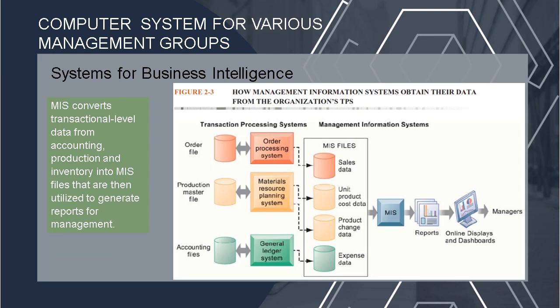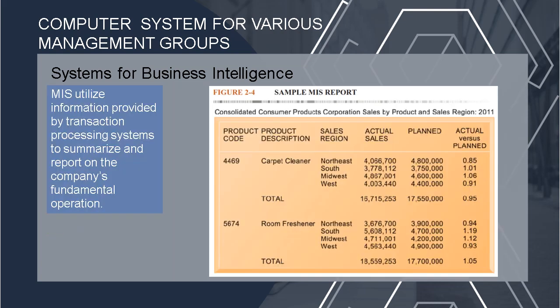If TPS handles the day-to-day operational transactions of the company, then in the system for business intelligence, MIS converts transactional-level data from accounting, production, and inventory into MIS files that are utilized to generate reports for management. Figure 2.4 is a sample MIS report — it compares the total annual sales numbers of particular goods to anticipated targets. This system typically lacks flexibility and analytics strength.